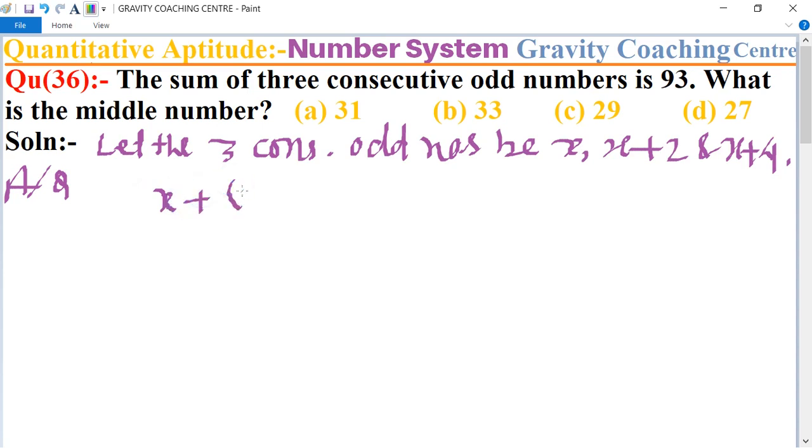plus (x+2) plus (x+4) equals 93. This implies that 3x + 6 = 93.